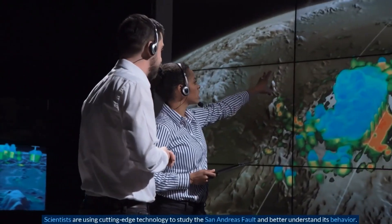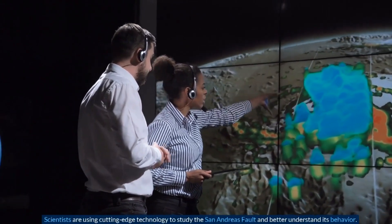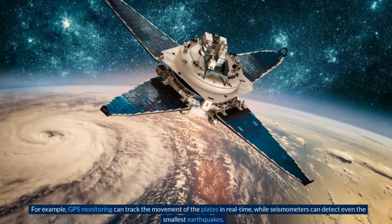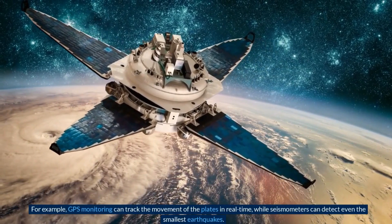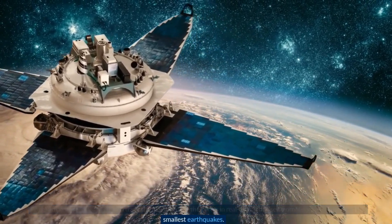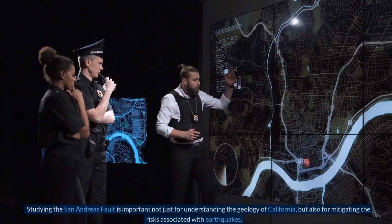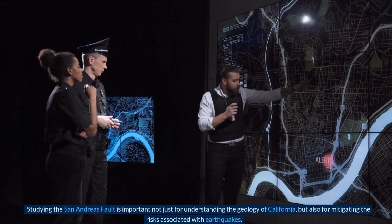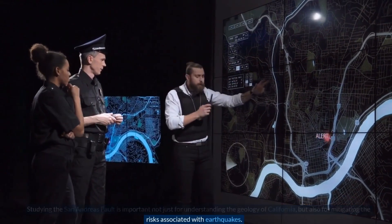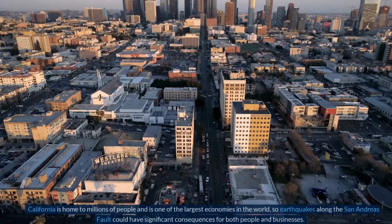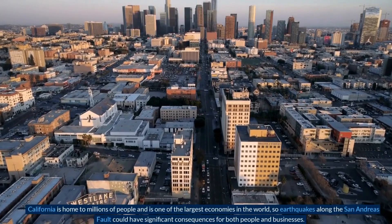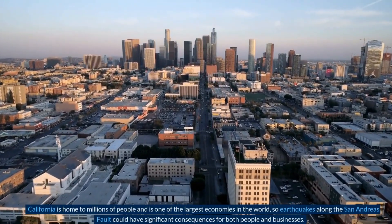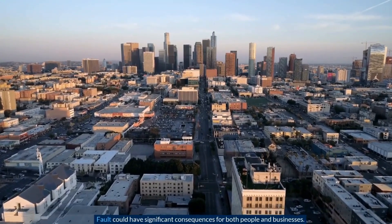Scientists are using cutting-edge technology to study the San Andreas Fault and better understand its behavior. GPS monitoring can track the movement of the plates in real time, while seismometers can detect even the smallest earthquakes. Studying the fault is important not just for understanding California's geology, but also for mitigating earthquake risks, since California is home to millions of people and one of the largest economies in the world.